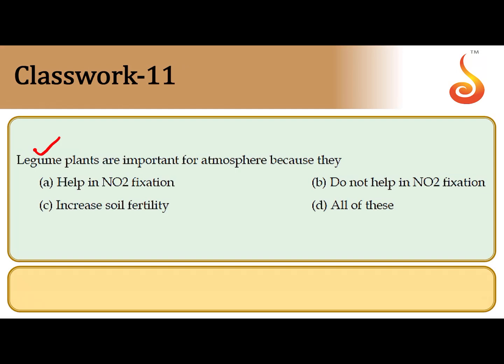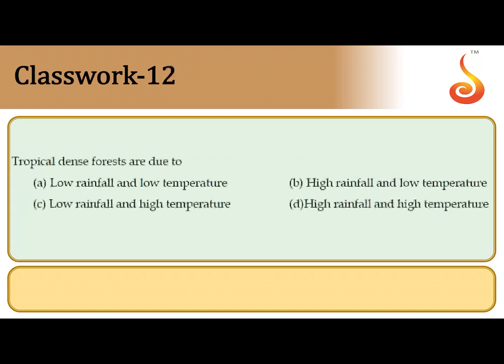The 11th question says: leguminous plants are important for the atmosphere because they help in nitrogen fixation, and ultimately they enhance the fertility of the soil. So the correct answer is option C: they increase the fertility of the soil. The 12th question: dense tropical forest. In tropical regions you have very high temperature and the highest annual precipitation or annual rainfall. So the correct answer is option D: high rainfall and high temperature.